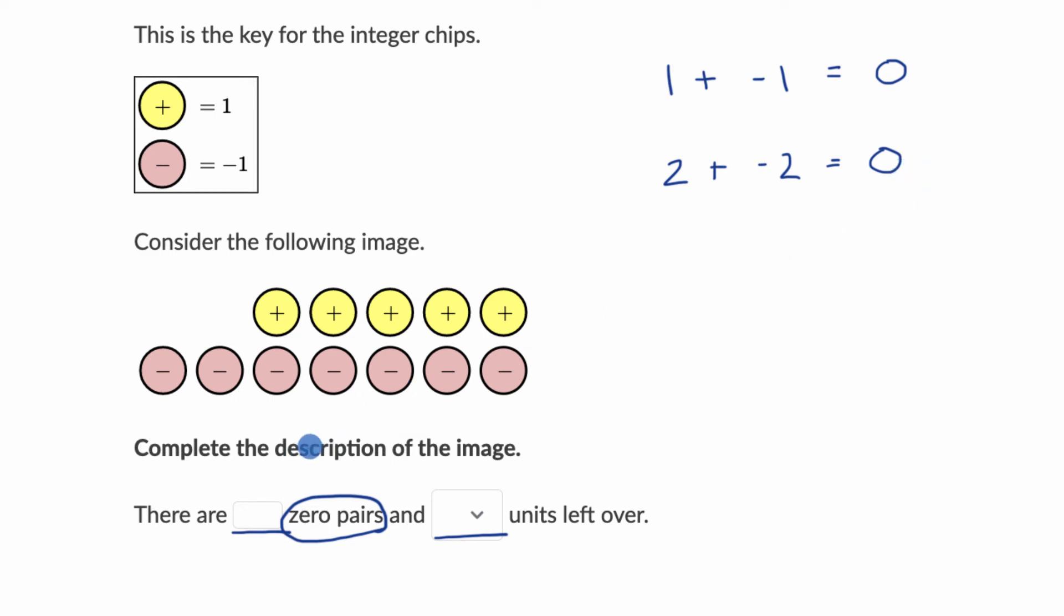So let's think about how many zero pairs there are over here. Well, we know that each of the ones forms a zero pair with each of the negative ones. So that's one zero pair, two, three, four, five zero pairs. So I'll just write a five right over here. You would type that in if you were doing this.